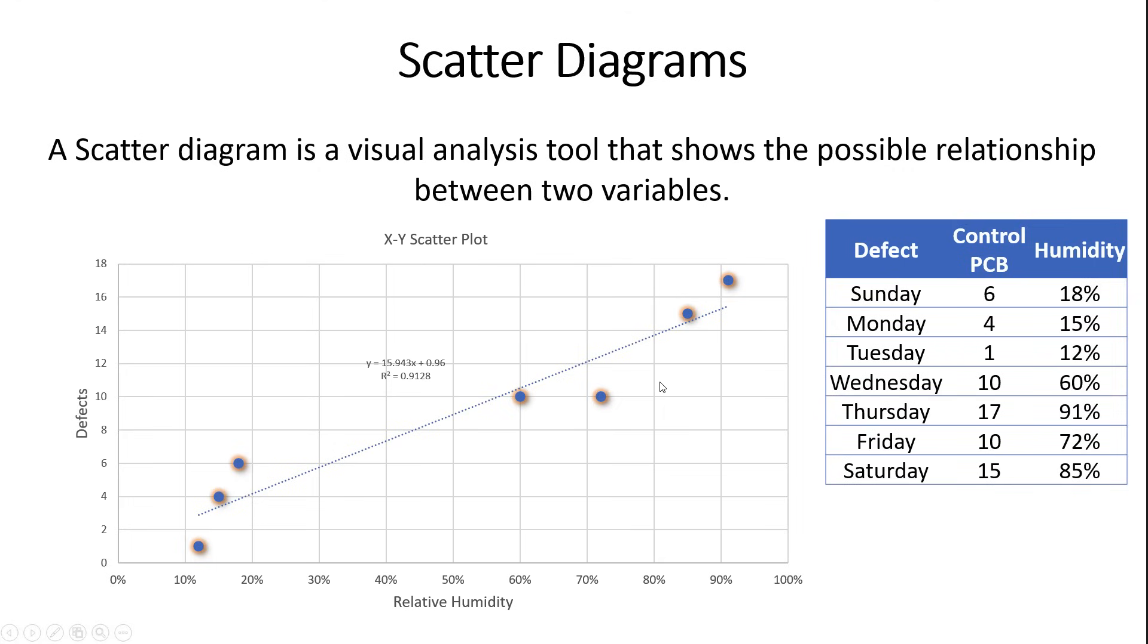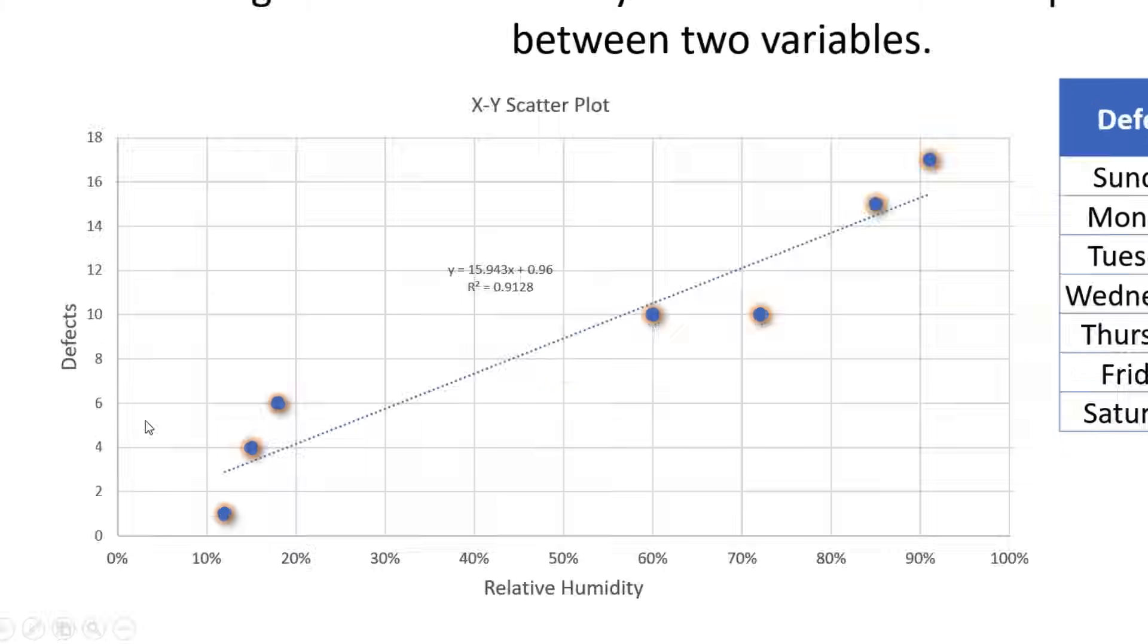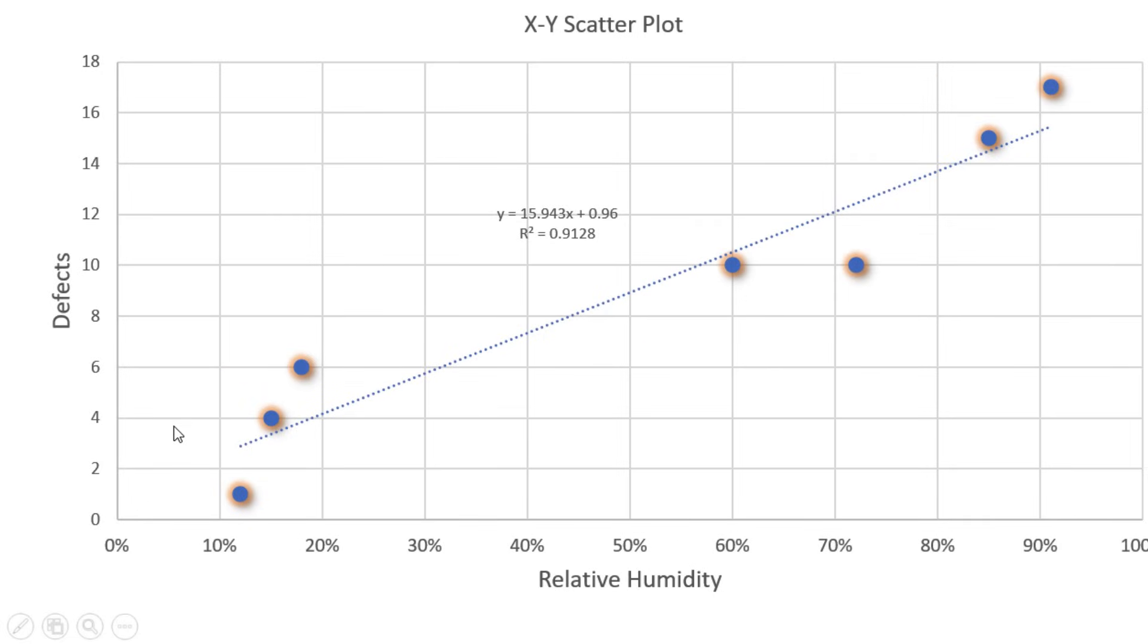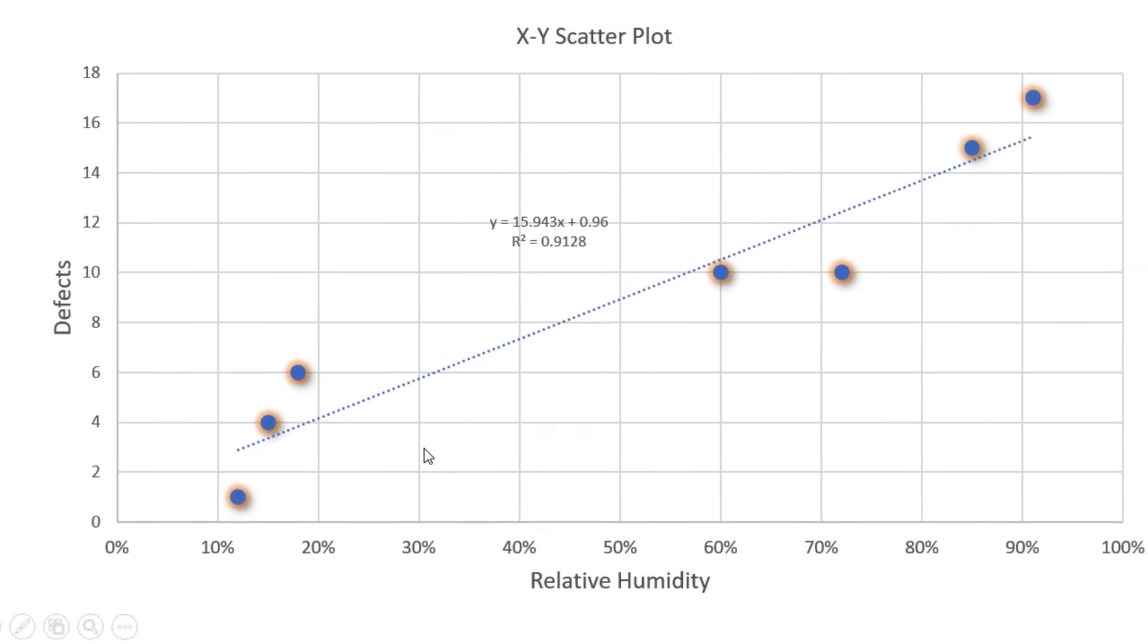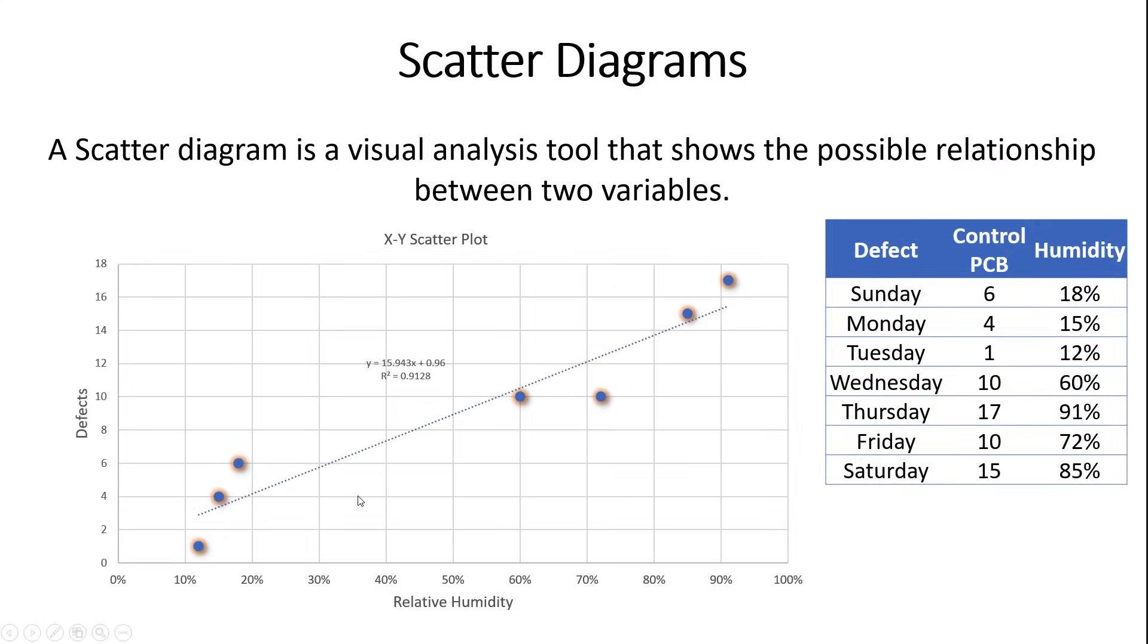It's really important when you're looking at the scatter diagram not to assume that this relationship is a causal relationship. There's this really important concept that you can have correlation without causation. Two parameters or two variables can correlate without having a cause and effect relationship. Let's assume that we've done a DOE here and we've proven that humidity has an effect on our PCB defects. We could say, our target for PCB defects is five or less, so we want to control humidity to around 20% to keep our defects low. A scatter diagram is a great way to understand the relationship between two possible variables.